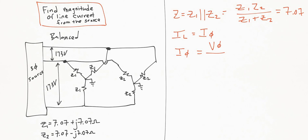Okay, so V_phase divided by Z. For a Y circuit, to get the phase voltage, it's the line voltage divided by the square root of three. So that would be 173 divided by the square root of three, divided by Z, which is 7.07. When we do that, we get 14.1 amps.